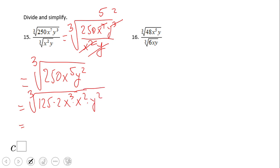Cubic root of x cubed is x, and that's it. The rest—2, x squared, and y squared—stay under the radical. So this is the final answer for number 15. Go ahead and try number 16.